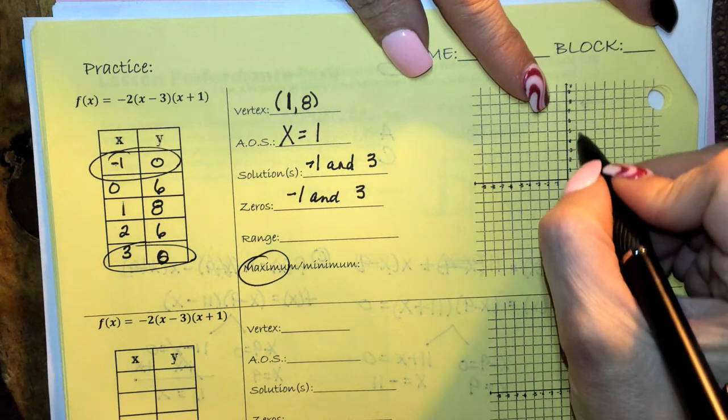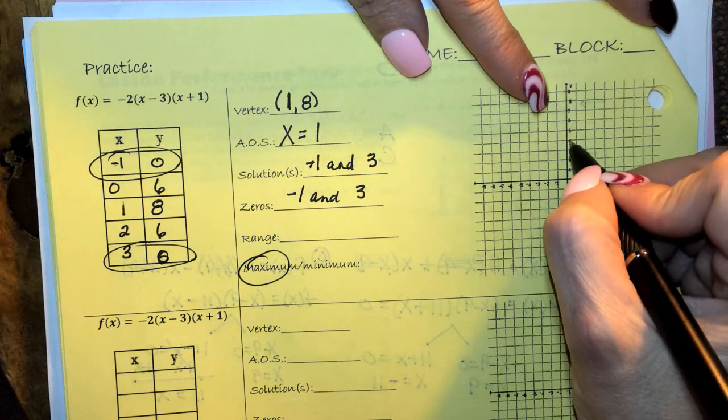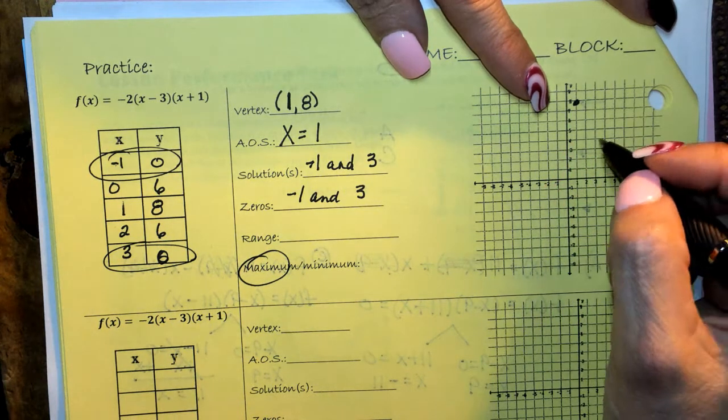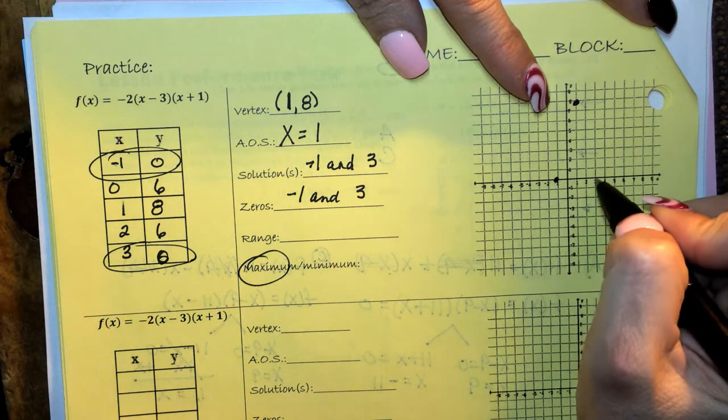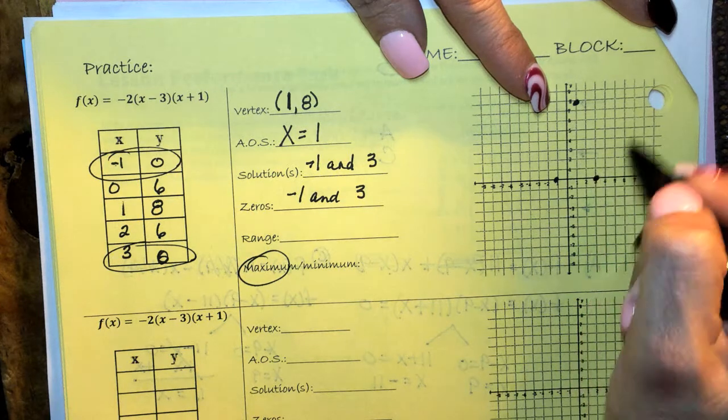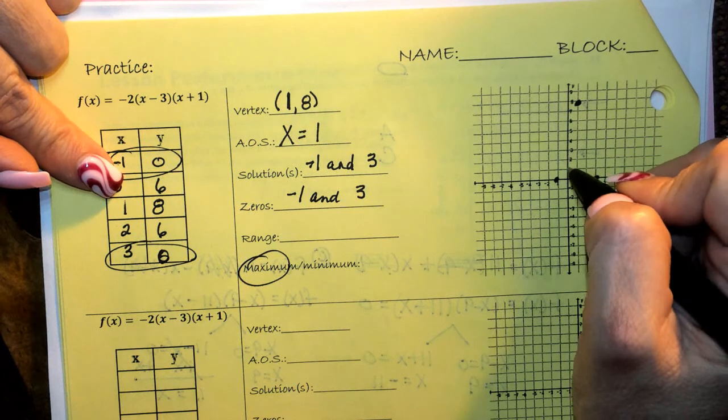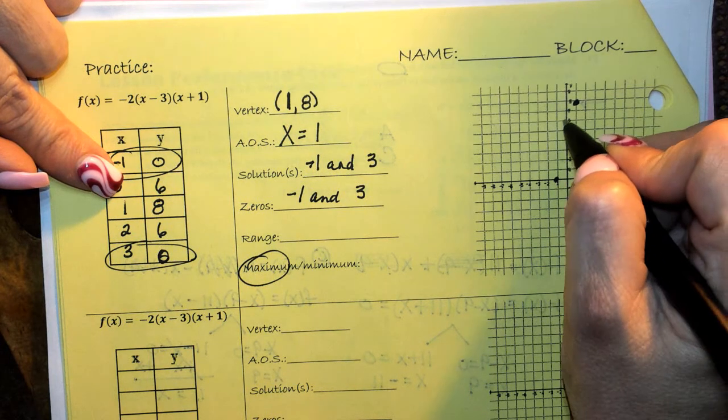I'm going to go over 1 and up. Let's see, 1, 2, 3, 4, 5, 6, 7, 8, so 1, 8, and then I'm going to do negative 1, 0, and 3, 0. The y-intercept is at 6, so 1, 2, 3, 4, 5, 6, right there.